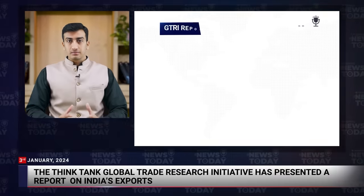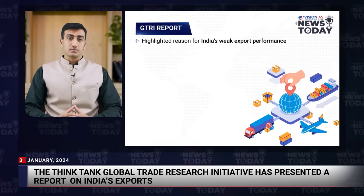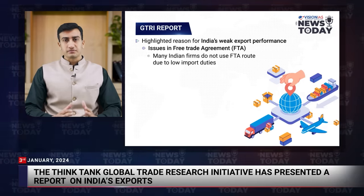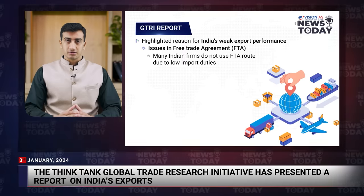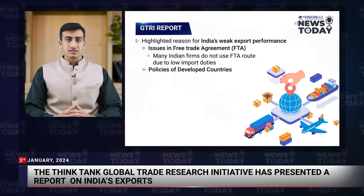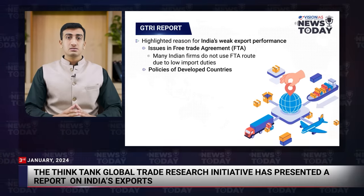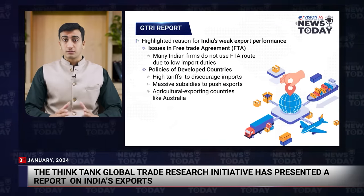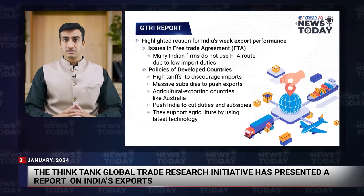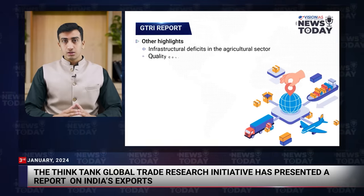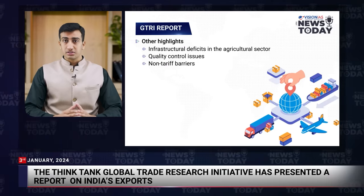Moving on: the think tank Global Trade Research Initiative has presented a report on India's exports. The report sheds light on the factors contributing to India's weak export performance across various sectors. One significant challenge lies in issues associated with free trade agreements, where many Indian firms refrain from utilizing the FTA route due to the already low import duties in partner countries. The compliance costs related to FTAs often outweigh the tariff benefits. Moreover, policies of developed countries such as the United States and the European Union pose obstacles with high import duties and substantial subsidies. Agricultural exporting nations like Australia push India to reduce duties and subsidies on agricultural commodities, while infrastructural deficits, quality control concerns, and non-tariff barriers further contribute to the challenges.